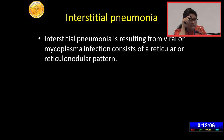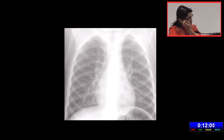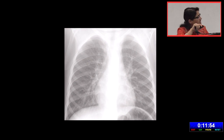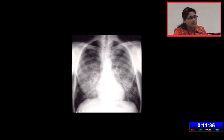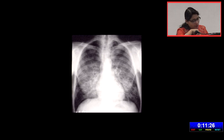Interstitial pneumonia results from viral or mycoplasma infection and consists of a reticular or reticulonodular pattern. Sometimes it is very hard to detect on chest radiograph because it occurs as a very subtle finding — just some peribronchial thickening since the interstitium is involved but the alveoli or airway has not yet been affected. When it becomes florid and progresses, you will have confluent linear and reticulonodular opacities with some centrilobular nodular component and no pleural effusion.